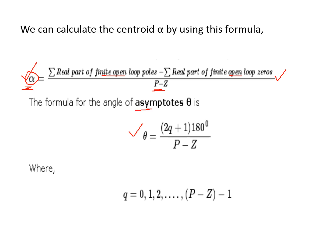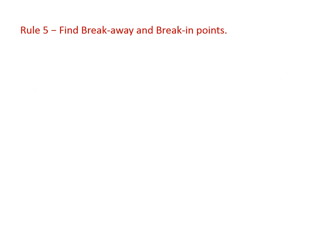The formula for the angle of asymptote is: theta equals (2q + 1) × 180 divided by (P minus Z), where q ranges from 0 to (P minus Z minus 1). Using these two formulas we can find out the centroid and the angles of asymptotes.